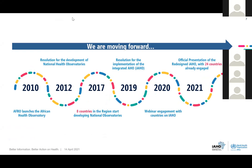As I was saying earlier, there was progress in 2010 when the regional Africa office launched the African Health Observatory. In 2012, the member states approved this launching. In 2017, eight countries in the region started developing national observatories. In 2019, there was a new resolution to encourage the regional office to develop an Integrated African Health Observatory. In 2020, we had a webinar to handle in-house validation, so that in 2021 we are able to present the redesigned Integrated African Health Observatory. There are already 24 countries that have engaged in this redesigned observatory.